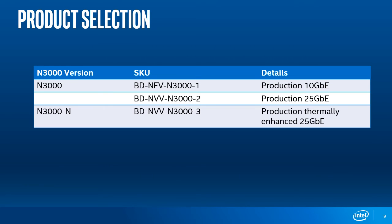There are two main variants of the PAC N3000 platform. We have the standard N3000 and a NEBS-friendly variant, which is suitable for systems that require NEBS compliance. The standard N3000 variant comes with two standard SKUs: a BDNFV N3000-1 SKU for 10 gigabit Ethernet connectivity, and a BDNVV N3000-2 SKU for 25 gigabit Ethernet connectivity. Then we have one SKU from the NEBS-friendly variant, BDNVV N3000-3, which provides 25 gigabit Ethernet connectivity in a thermally enhanced hardware.